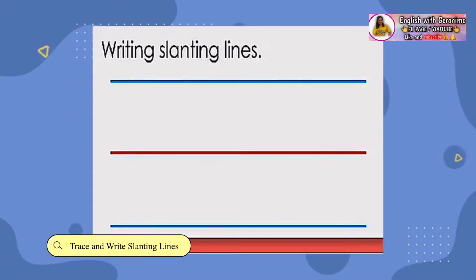Now, let us write slanting lines. Let's start from the top to bottom in a right-diagonal way.